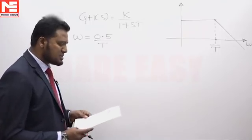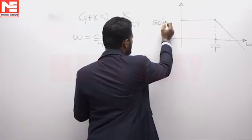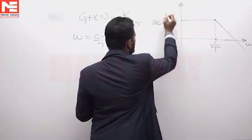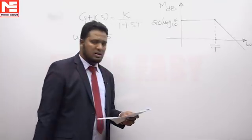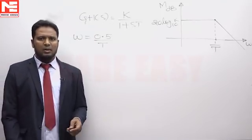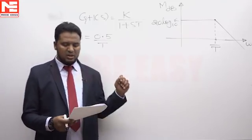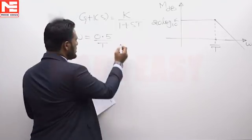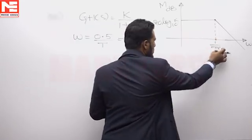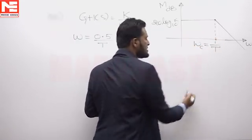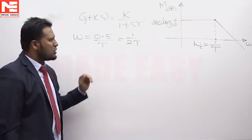The open loop transfer function of a system is given and the Bode plot of the system is also given. The question is to find the error in this asymptotic Bode plot compared to the actual Bode plot at frequency 0.5/T, that is one octave below the corner frequency, the corner frequency being 1/T. You have to find the error at a frequency one octave below the corner frequency.